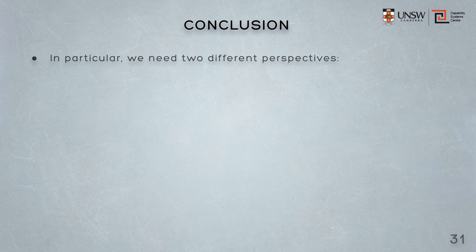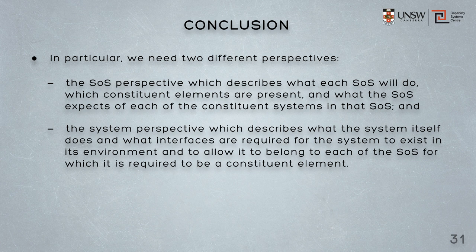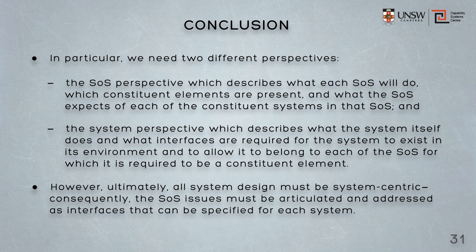So in conclusion, we need two different perspectives when designing system of systems. We need the system of systems perspective because it talks about how those systems are going to combine to achieve the purpose of the system of systems. We need to state what the system of systems expects of each of the constituent systems to achieve that purpose. But we need to transform then from that description into a system-centric perspective which describes what the system itself does, what interfaces are required for that system to exist within its environment, and to exist within the system of systems — or rather, all the system of systems to which it's meant to be a constituent element. However, ultimately, all system design must ipso facto be system-centric, since the system is, by definition, managerially and operationally independent. Consequently, system of systems issues must be articulated and addressed as interfaces that can be specified for each system.